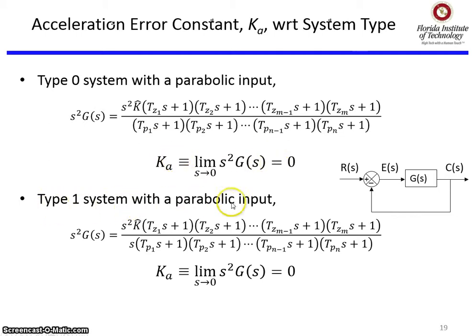Type 1 system, parabolic input. We still have s squared G(s), so the s squared stays in the numerator, but now we're a type 1 system for G, which means there's one s in the denominator. But even though this will cancel, we still have an s left over in the numerator, so when I run s equal to zero, Ka is going to equal zero.